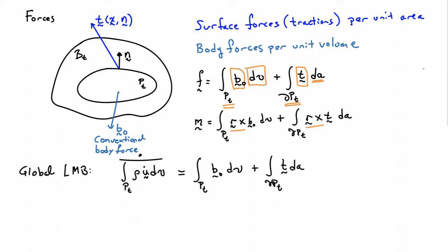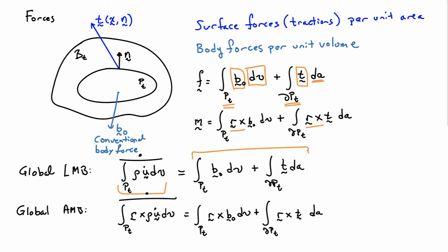If I put it all together, the statement of global linear momentum balance is the time rate of change of the linear momentum, written in integral form, equals the total force acting on the part. We have a similar expression for the global expression of angular momentum balance, which is the time rate of change of the angular momentum acting on the part equals the total moment acting on it. Note that both these sets of integral equations hold for all parts PT subsets of the total body. We'll need that later when we try and localize these expressions.